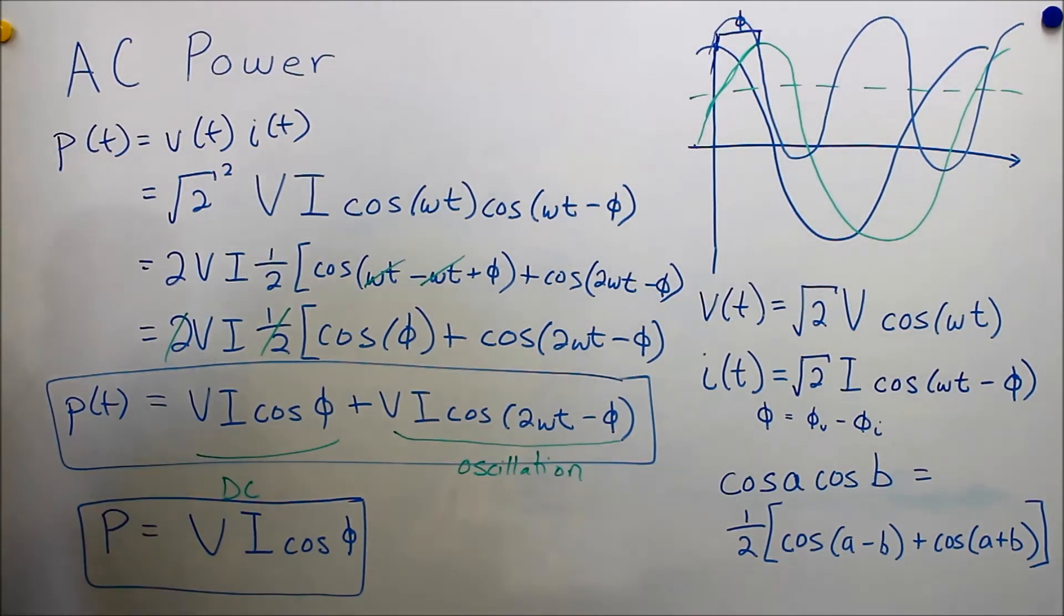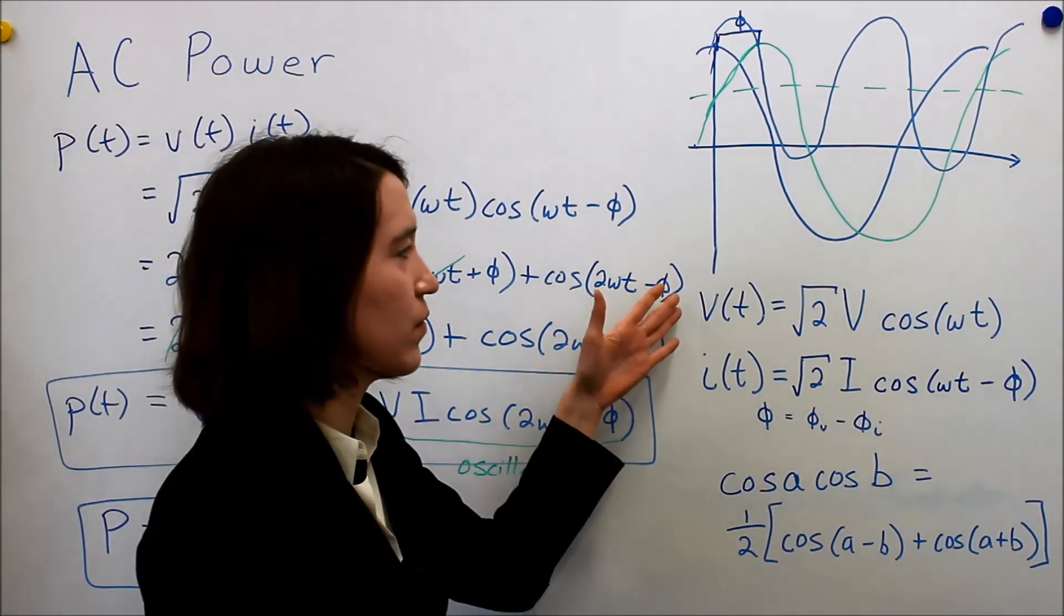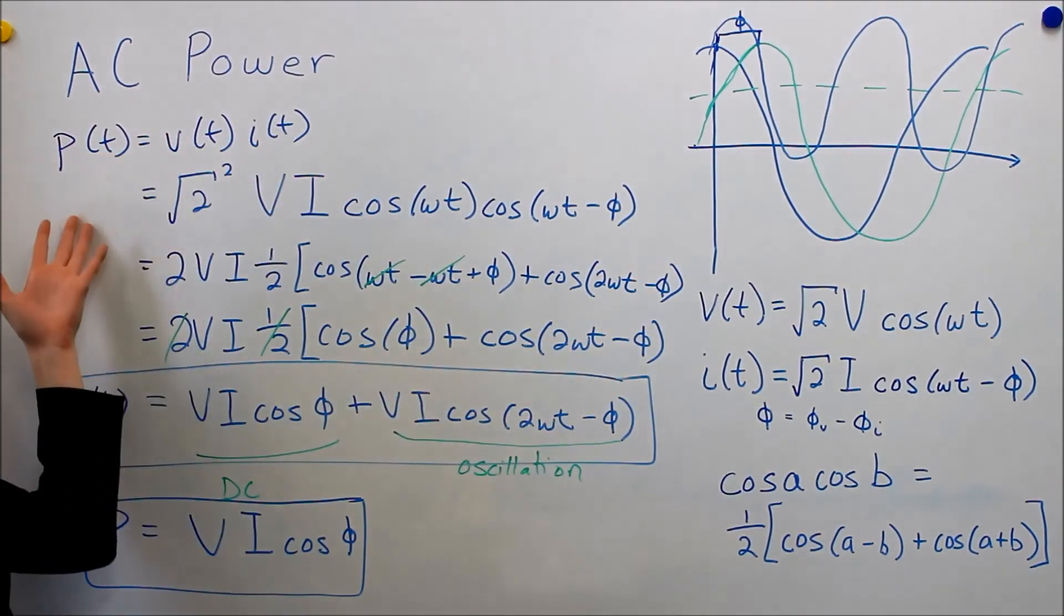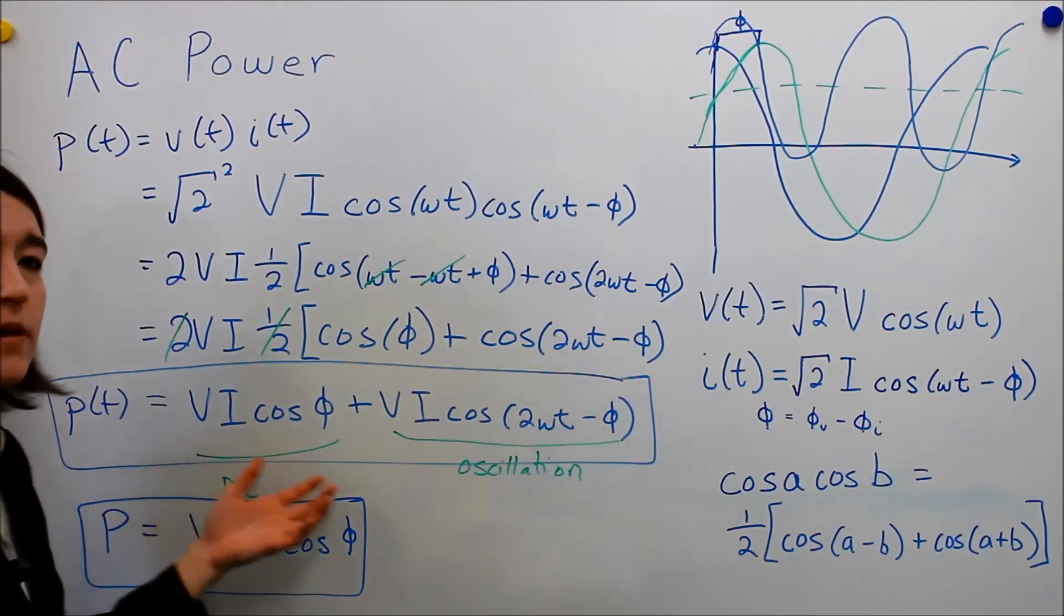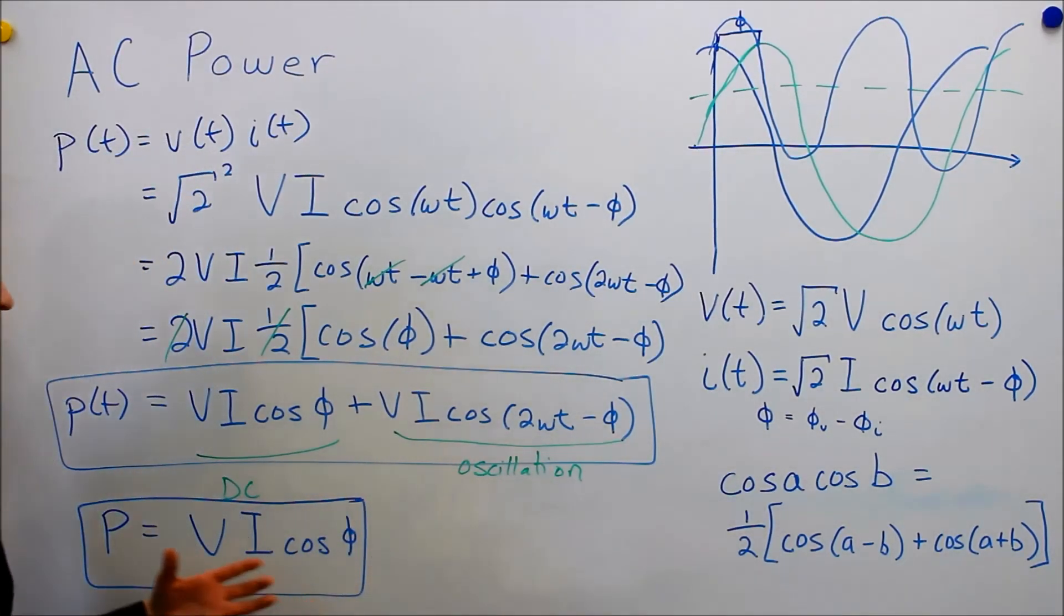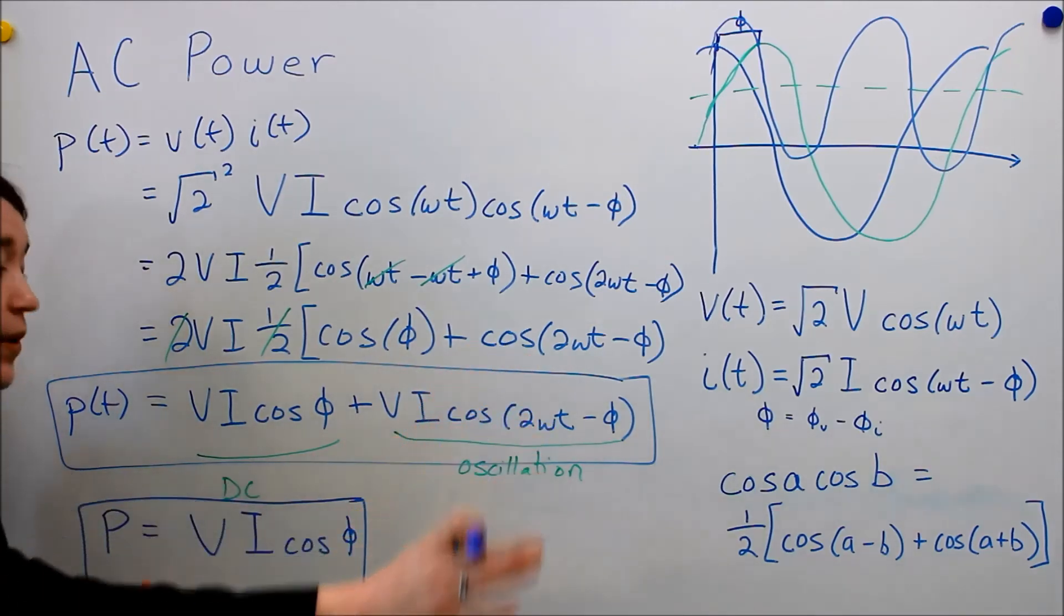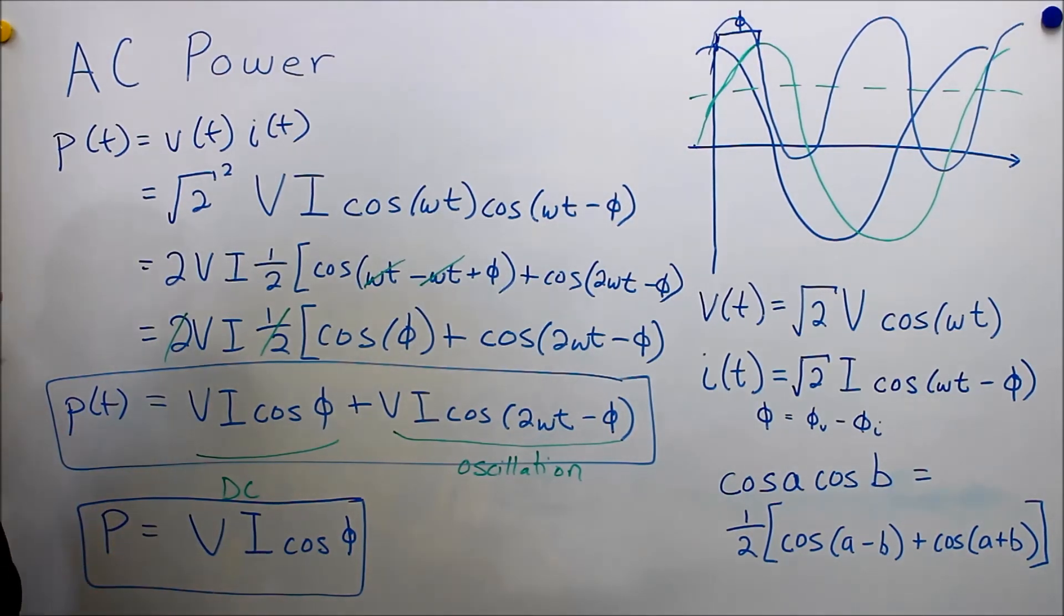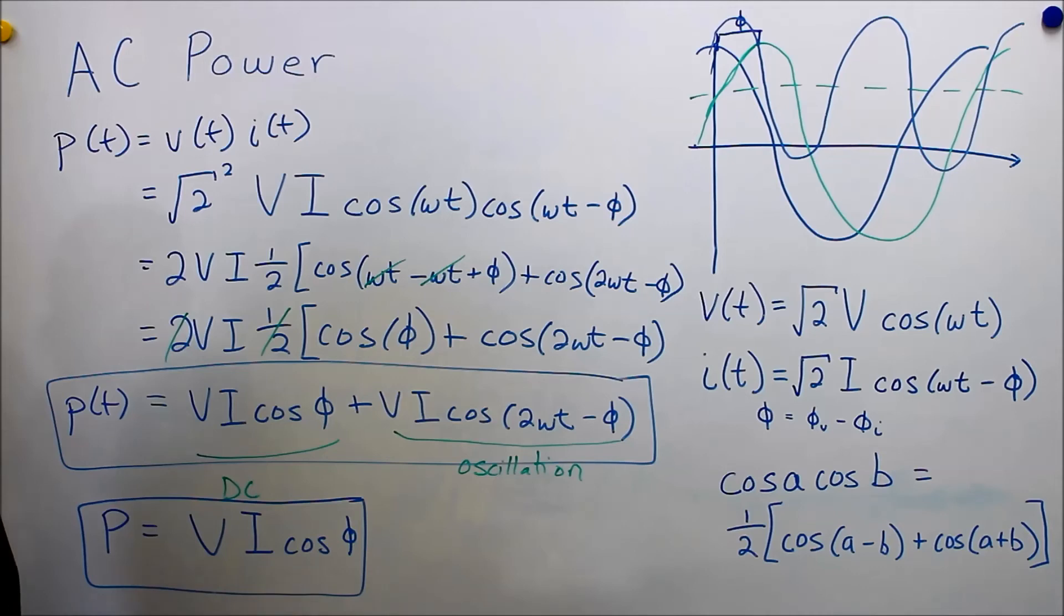So I hope that kind of made sense. We're looking at the two waveforms of voltage and current. Just looking at the power waveform, we see that we get a DC component and an oscillatory component. When we want to just find the average power, we can get rid of this oscillatory component and just look at the DC component. So these are the two equations for power, the instantaneous and the average power of an AC waveform.